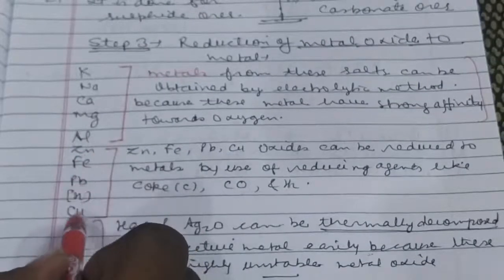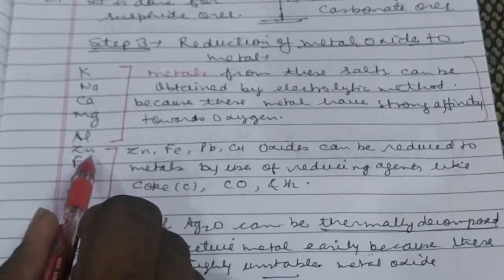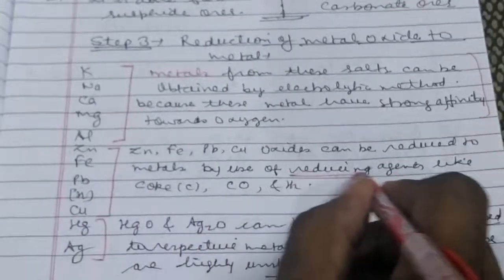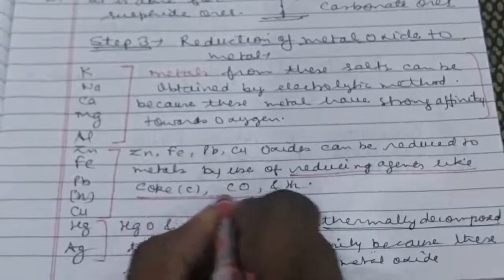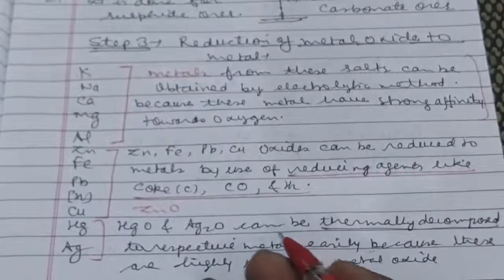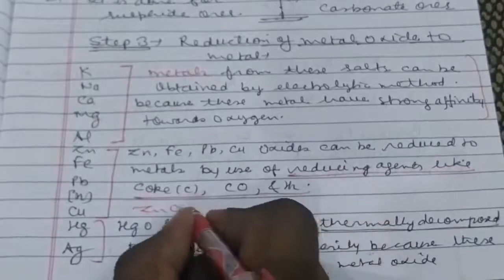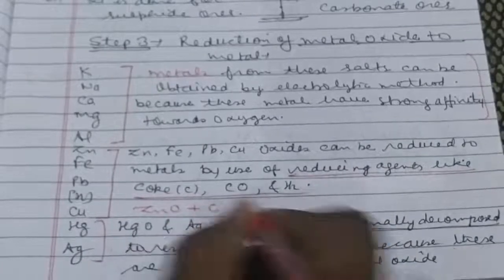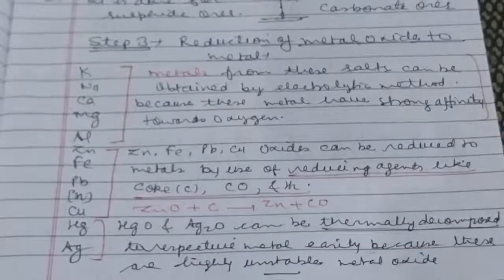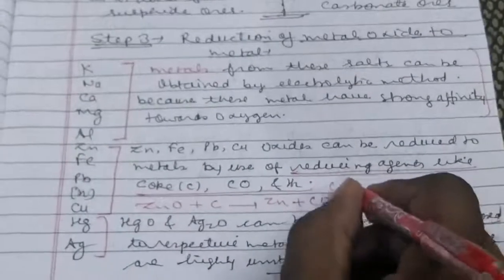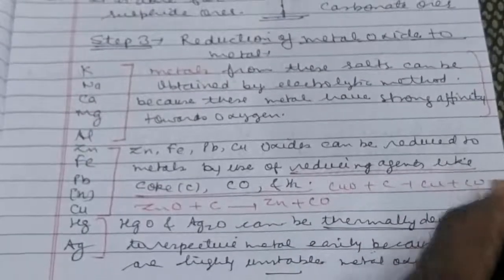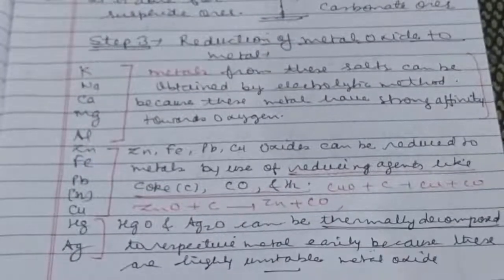Next, zinc, iron, lead, copper. If you have to remove obtained metal from its metal oxide, then simply you can use reducing agents like coke, carbon monoxide and hydrogen. Suppose you have zinc oxide and you have to form zinc, then you will use coke to form Zn and CO. By this way, you can use other reactions like CuO plus C gives Cu plus CO. Then you can use coke again.